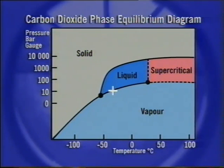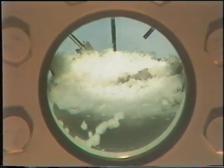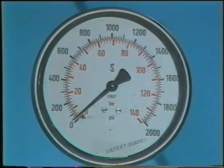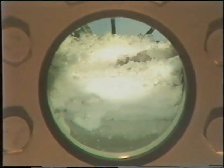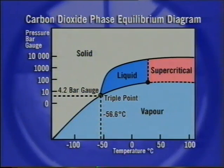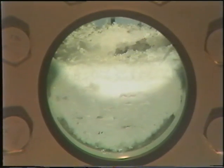The system has now moved further down the equilibrium line. Solid CO2 begins to form. A pressure of 4.2 bar gauge and a temperature of minus 56.6 degrees centigrade has been reached — this is the triple point, the only combination of pressure and temperature at which three different phases of CO2 — solid, liquid, and vapor — can exist simultaneously in equilibrium.